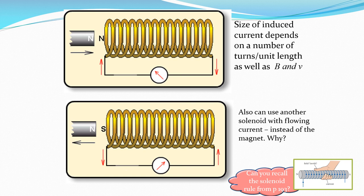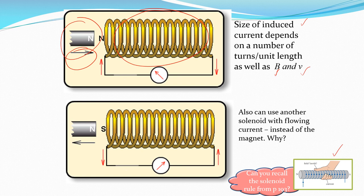The size of the current depends on the number of turns per length of your solenoid, the magnetic field B, and the velocity V. So it depends on how many turns you have, how strong the magnet is, and what velocity it's going in at. The hand rule — fingers show the direction of the current as it wraps around, and the north poles have to oppose each other.